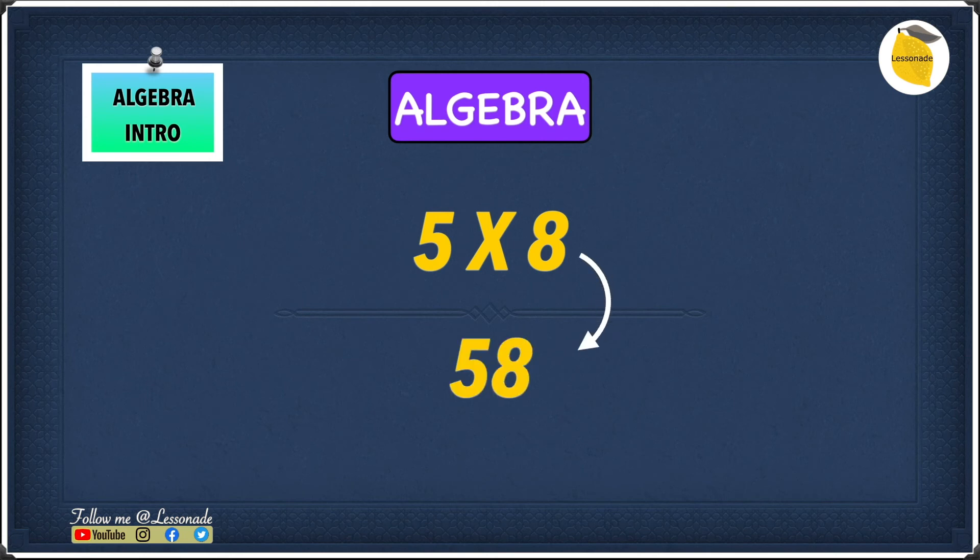You will get 58. And as we all know, 58 is not the same as 5 times 8. So when you're multiplying numbers, you still need a multiplication sign.